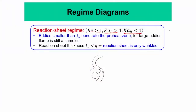Karlovitz number greater than 1 means that LL is essentially greater than eta, and tau_L is greater than tau_eta. This means that eddies smaller than LL but still greater than eta can penetrate the preheat zone. For large eddies — those greater than LL — the flame still behaves in a flamelet manner. The reaction sheet thickness LR is less than eta, so the reaction sheet is only wrinkled.